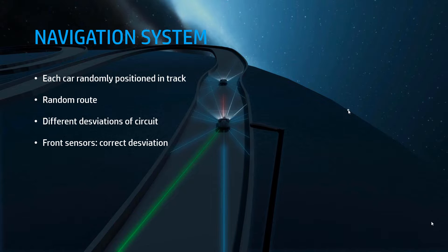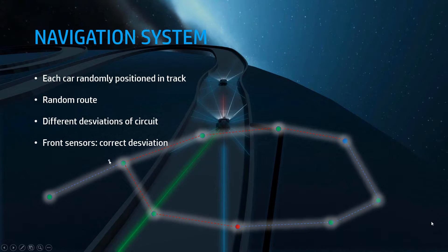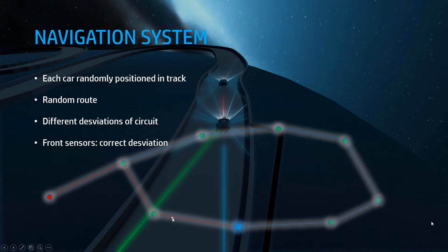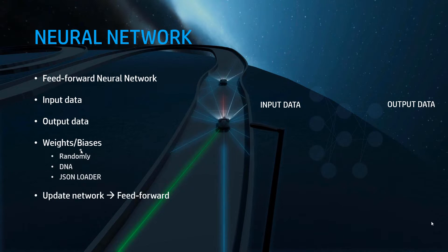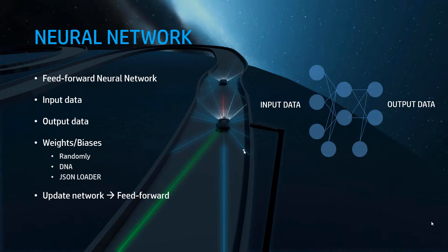The navigation system is something I will be implementing, and the idea is to have random routes that cars must follow, like a normal GPS. As you are seeing here, for example in a track with two deviations, if we are at the blue point and want to go to the red, the car needs to make that movement. When it reaches the new point it will calculate the best route again. This will be more complex because the track will have two directions and cars can collide head-on.